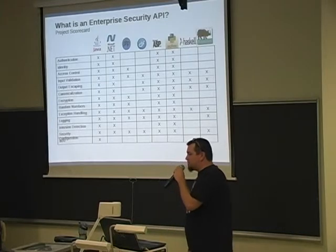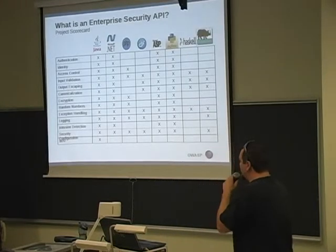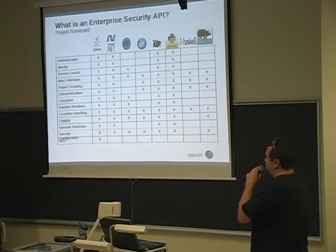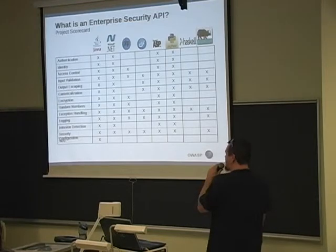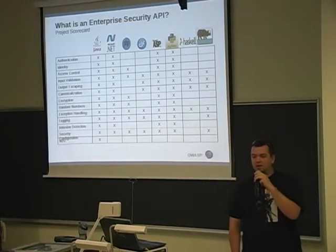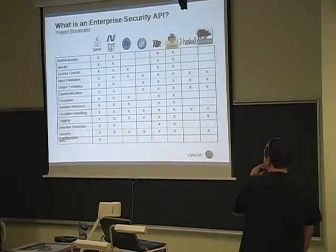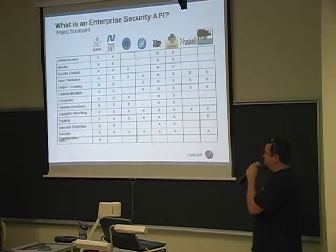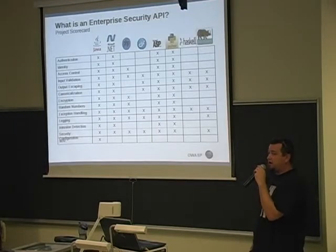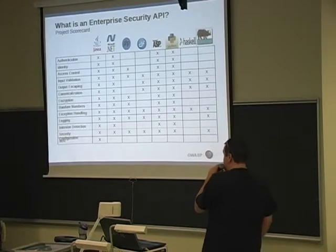This is a scorecard graphic that shows the status of all the different implementations of the ESAPI. Java is the driving force behind all these other implementations, .NET is a close follower, and then down to the newest ones like Haskell and JavaScript. This outlines which security controls that are part of the API are implemented in each of the different language implementations of the ESAPI.